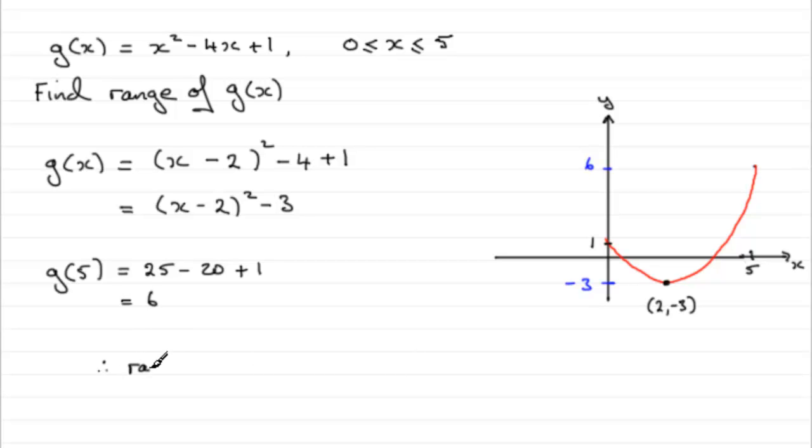the range of g(x) is going to be g(x) is greater than or equal to minus 3 and less than or equal to 6. We have equals to on these because we can take the values of 0 and 5.